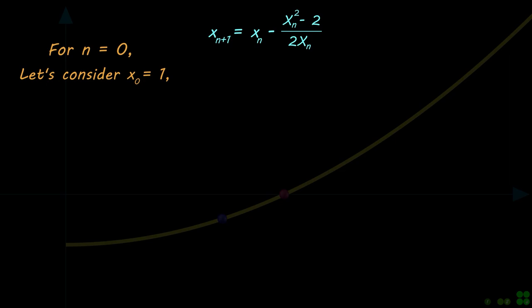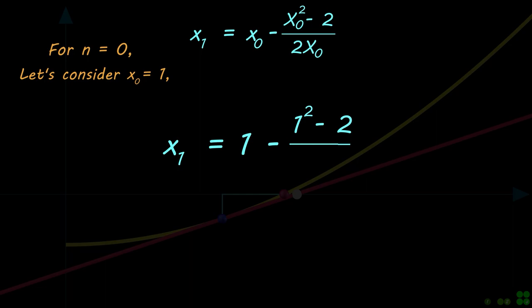For the first step that is n equals 0, let's assume that x0 is equal to 1. Using this value into the equation, we can find the value of x1 as shown.